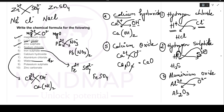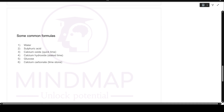Water is H2O — you know this well from lower classes. Sulphuric acid is written as H2SO4. Quick lime is the common name for calcium oxide.